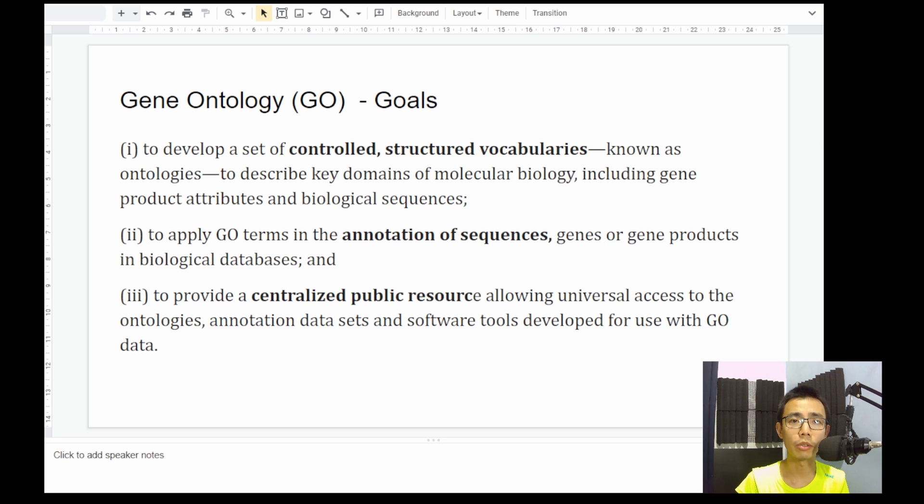Okay, so what we are trying to do is to understand Go Semantic Similarity. But before we go into that and the mathematics, let's talk a little bit about Go. What is gene ontology? The Gene Ontology Consortium actually tries to develop controlled and structured vocabularies, known as ontologies, so that we can properly communicate what is the function of the gene with terminology that we can understand.